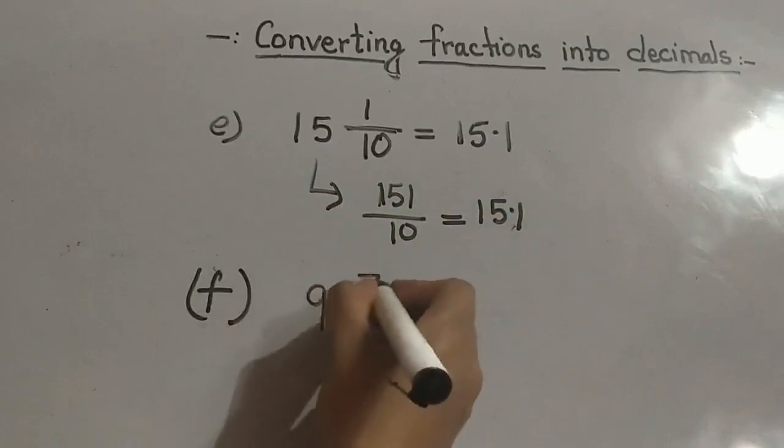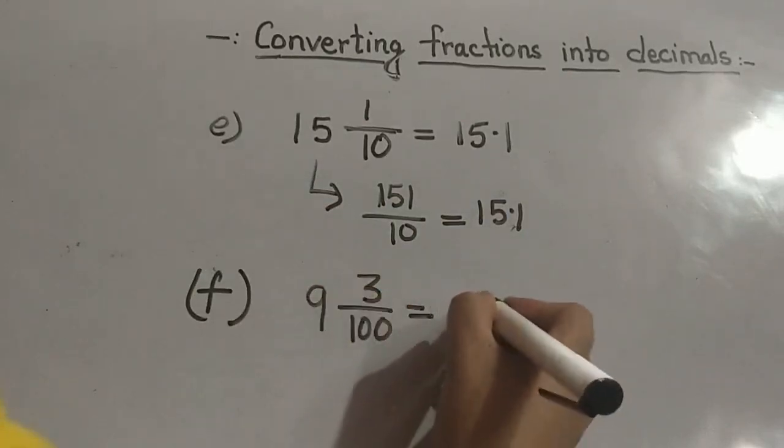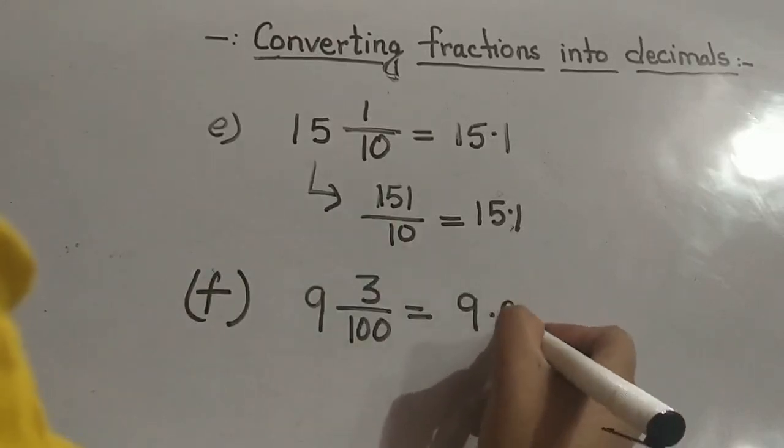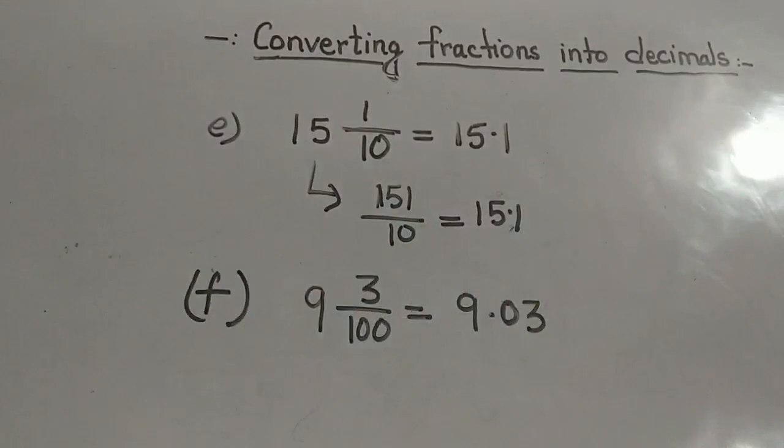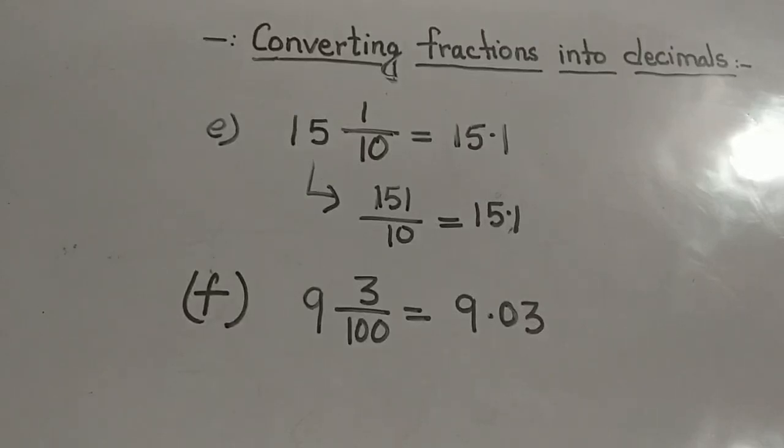9 whole 3 upon 100. So whole number will be before the point. After the point how many digits should be there? Two. And we have only one, so we will give 1 zero: 9.03. This was about the decimal fractions. Now what if we are getting another type of fractions?